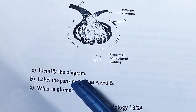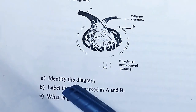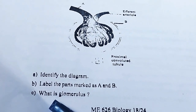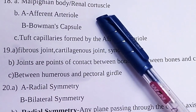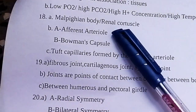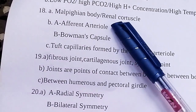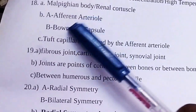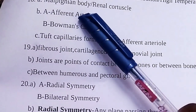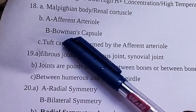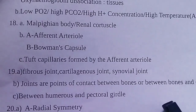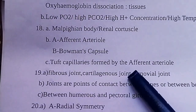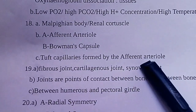Question: Identify the diagram and label the parts marked A and B. The answer is the Malpighian body (renal corpuscle). The tuft of capillaries formed by the afferent arteriole is known as the glomerulus.